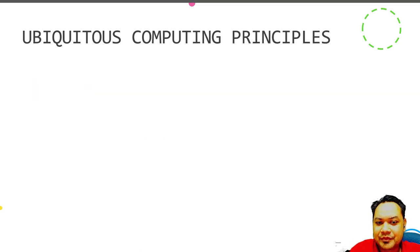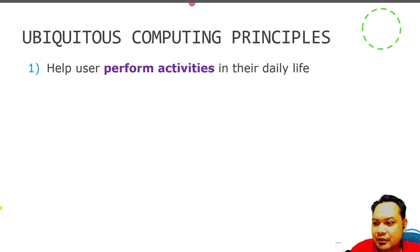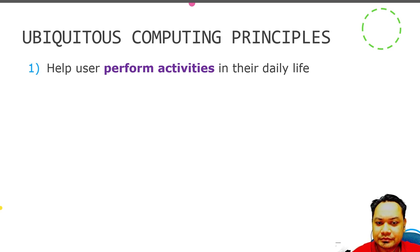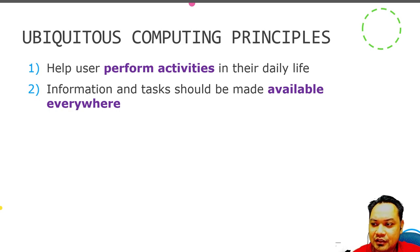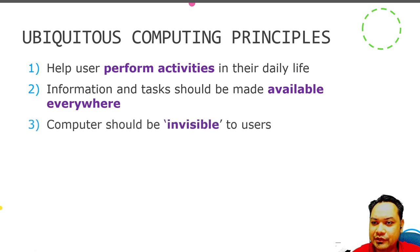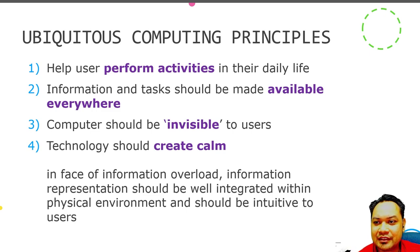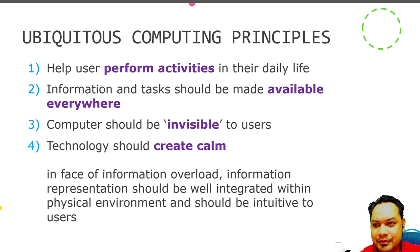Next we look into the Ubiquitous Computing principles. The primary concept is that it should help the user perform activities in their life. It should reduce information overload and make all the information and tasks available everywhere, meaning the user can perform tasks even remotely with the help of the physical object they possess. Computers should be invisible to the user, and the technology should create calm so the user is not burdened with information overload. Information should be presented to the user in a precise, concise, simple, and physical manner.